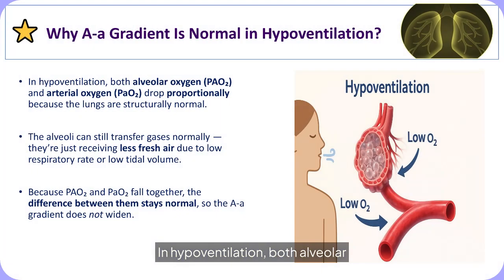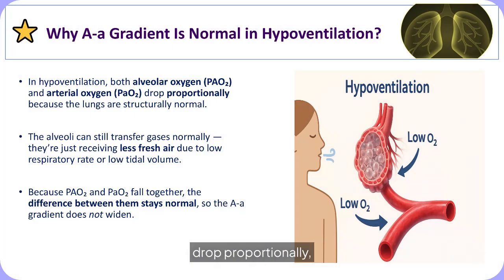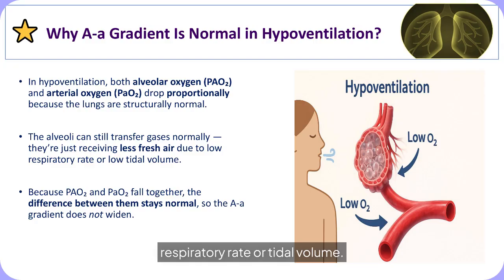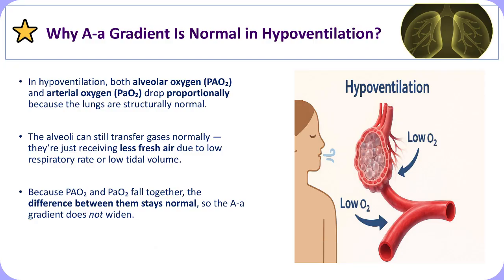In hypoventilation, the lungs are structurally intact, so the mechanism of alveolar gas exchange remains normal, even though ventilation is reduced. Both the alveolar oxygen level and the arterial oxygen level decline proportionately because the primary problem is insufficient fresh air reaching the alveoli, not a defect in the alveolar-capillary interface. Since oxygen transfer capacity is preserved, the difference between alveolar and arterial oxygen does not increase, resulting in a normal alveolar-arterial gradient despite the presence of low oxygen levels.